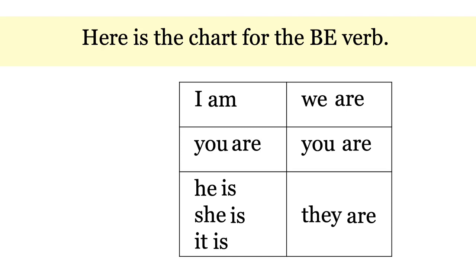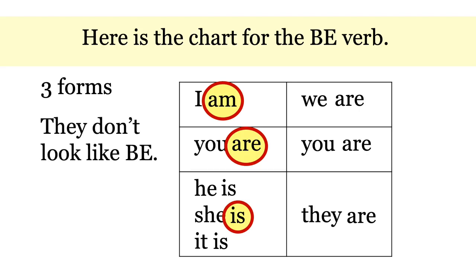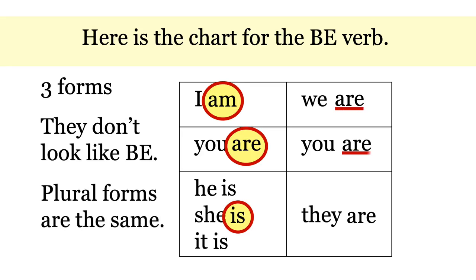You can see there are three forms of the BE verb. Other verbs only have two forms, but BE is always different. You can see that BE is strange because none of these forms look like BE — there is no letter BE in any of them. Also notice that the plural forms are all the same word.